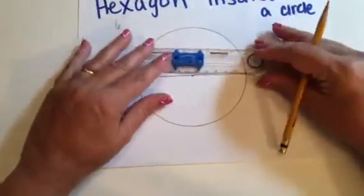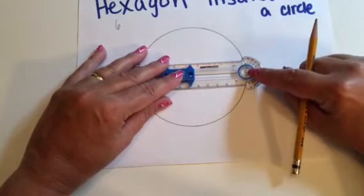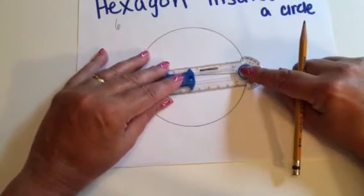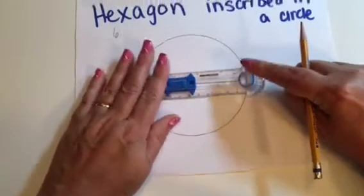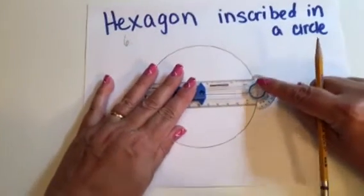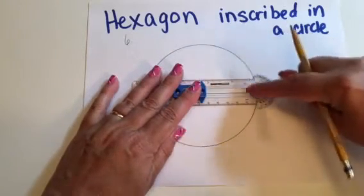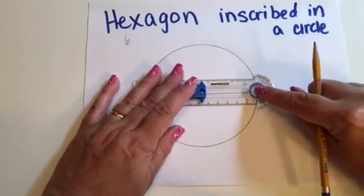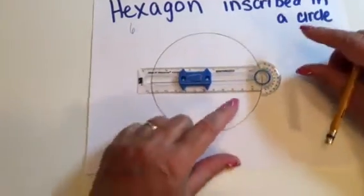So what we're going to do is we're going to take our compass, and we're going to measure the distance from that point, which is called the point of tangency, to the center of my circle. Once I've measured that distance with my compass, I'm not using any of the rulers, I'm using my compass. I am going to take that measurement, and I'm going to mark my circle.